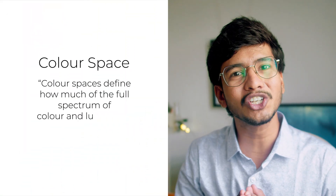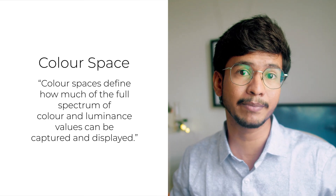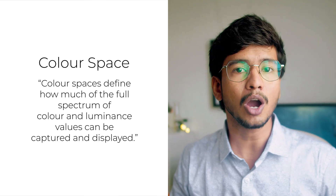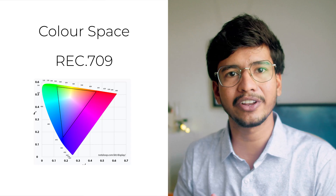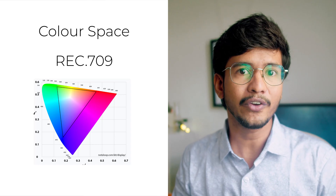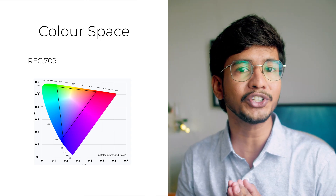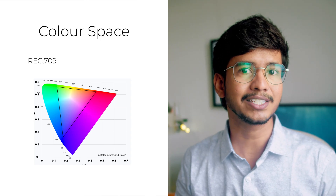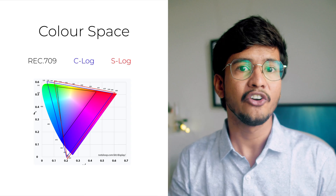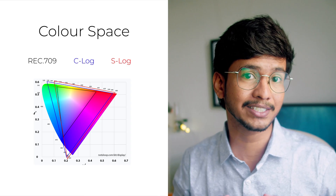To fully grasp bit depth, we need to understand how it interacts with color spaces and gamma curves. Color spaces define how much of the full spectrum of color and luminance values can be captured and displayed. Common color spaces like Rec.709 have a relatively narrow gamut, which limits the range of colors and luminance values. High-end cameras often use wider color spaces such as C-Log and S-Log, which can capture more colors than most devices can display, providing more options for color grading.